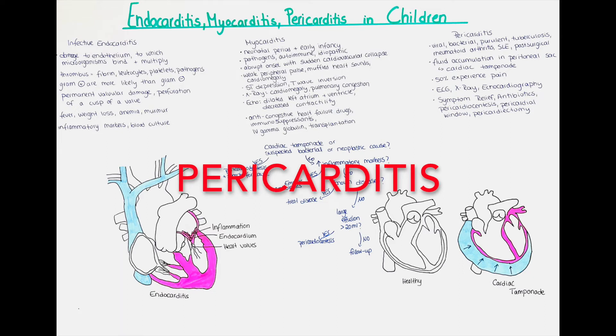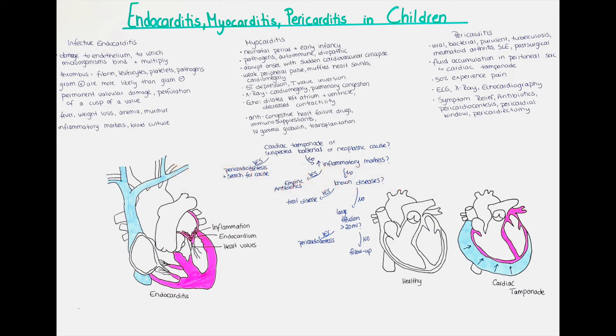The next kind of inflammation is pericarditis, the inflammation of the outer layer of the heart. This can be due to many different causes. Some of the most common are idiopathic, viral, purulent, bacterial, tuberculosis, juvenile rheumatoid arthritis, systemic lupus erythematosus, uremia, neoplastic diseases and postoperatively after surgery.